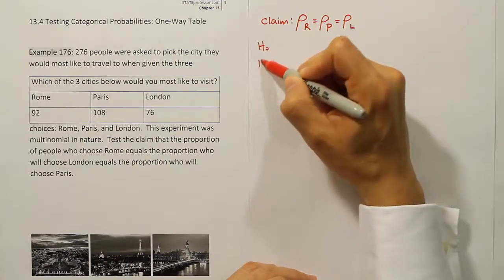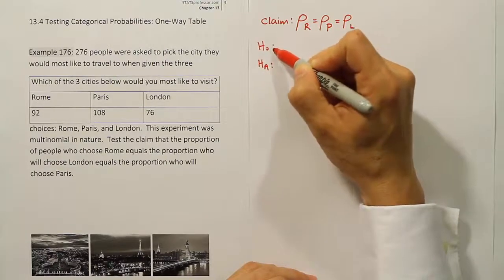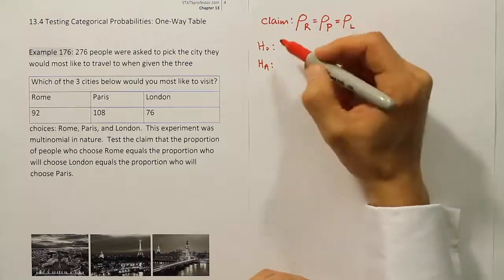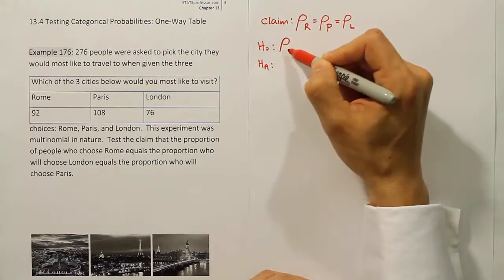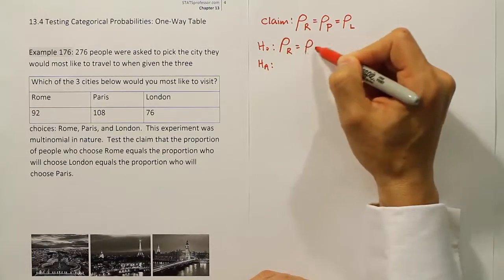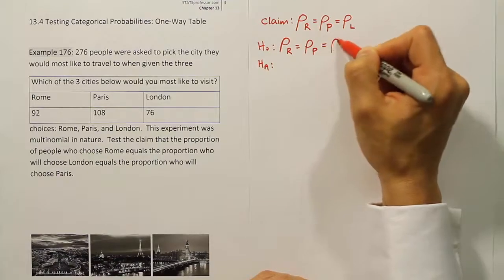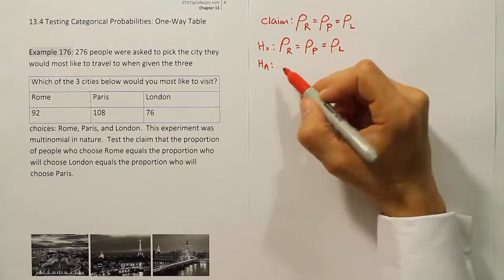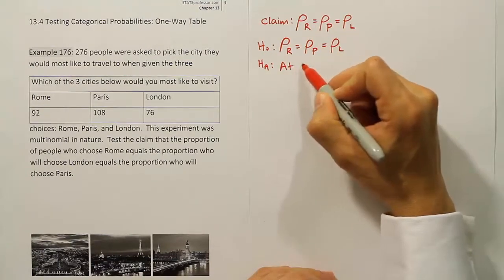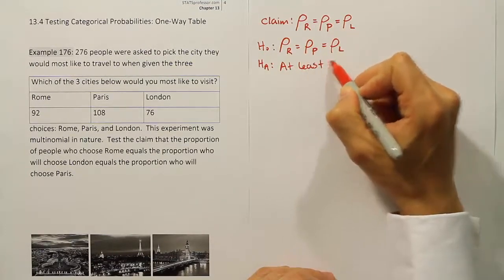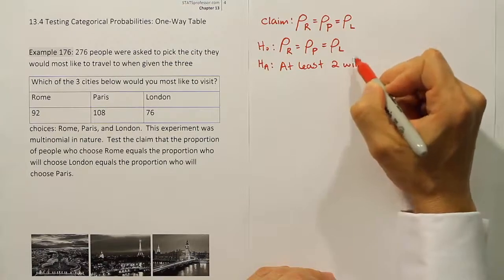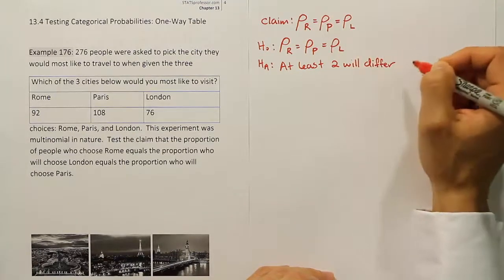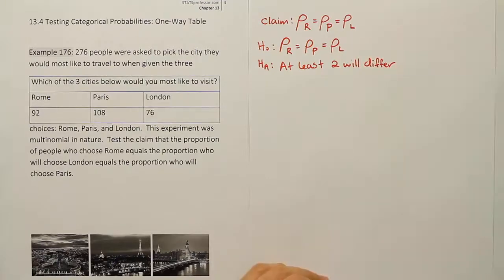H0 and HA will follow from that. H0 is going to be the same as the claim, because the claim is filled with all these equal signs: the proportion of Rome equals the proportion of Paris equals the proportion of London. And HA is just going to express the idea that at least two of these will differ significantly from each other — in other words, you can find a pair of them that are not the same.